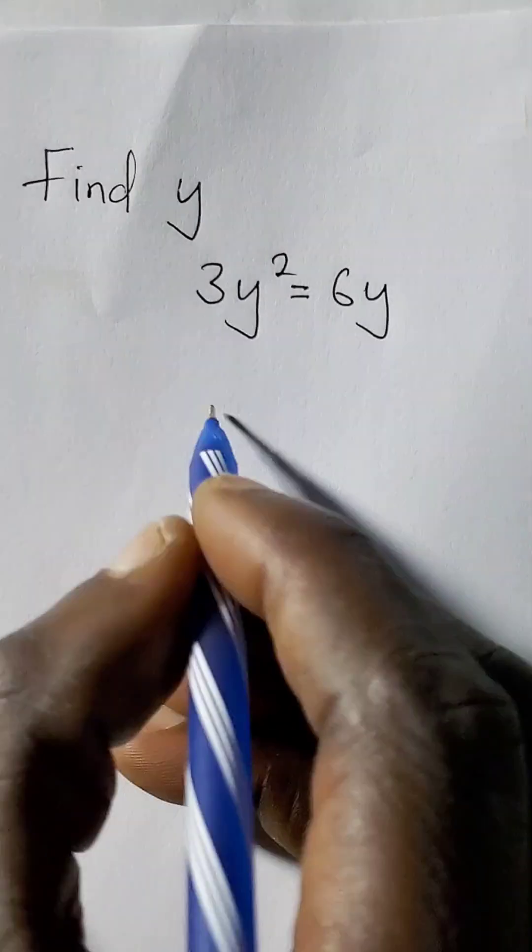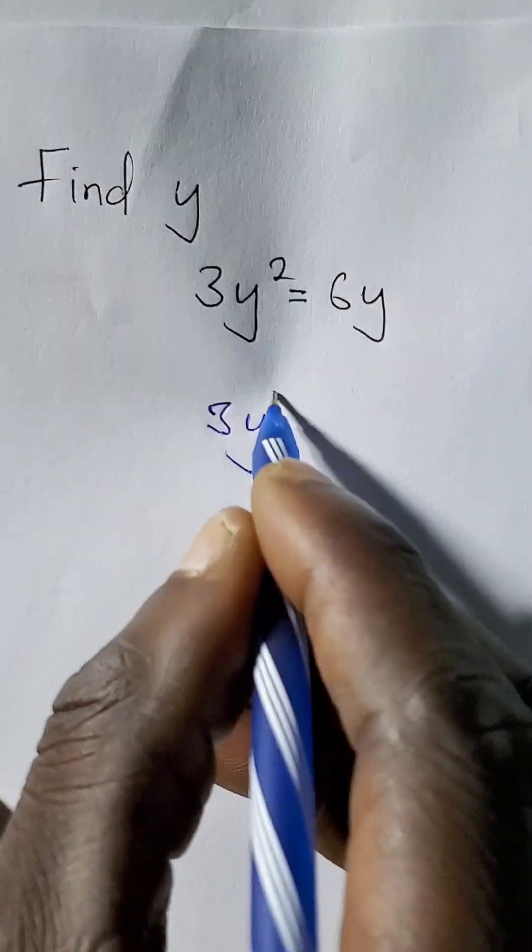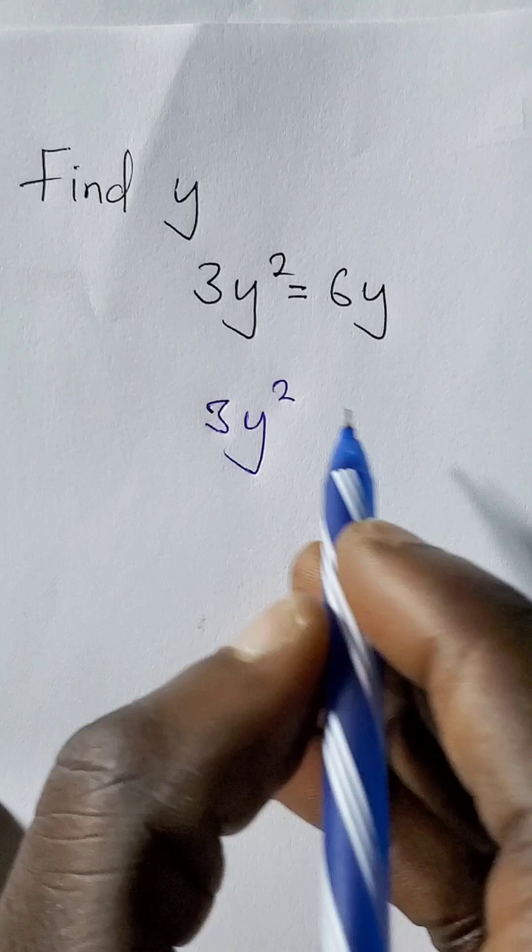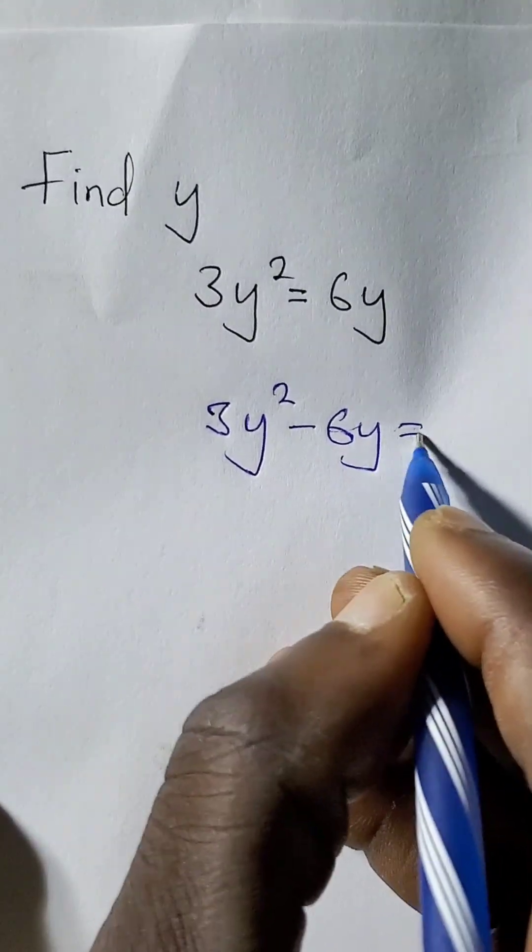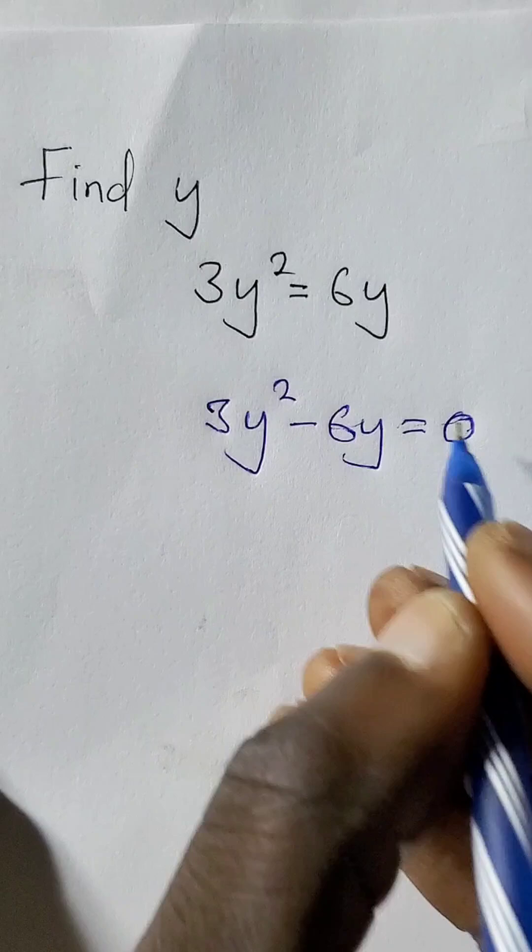To solve for y here, we're going to write 3y squared, then the 6y crosses to the other side, it becomes negative 6y is equal to 0.